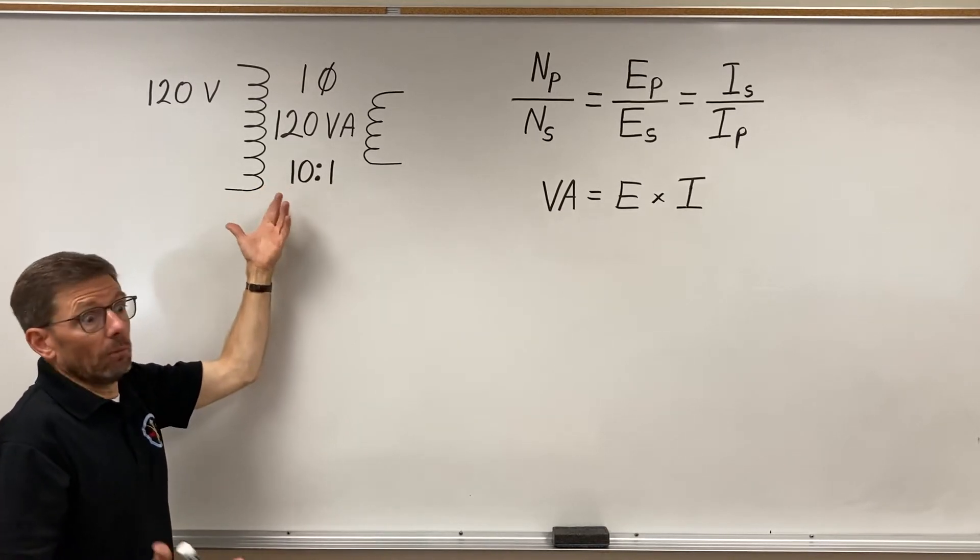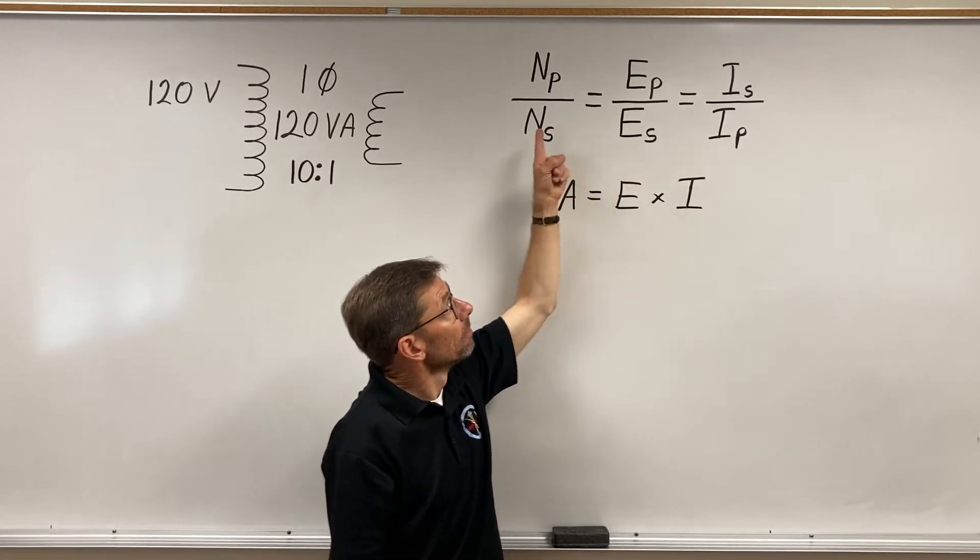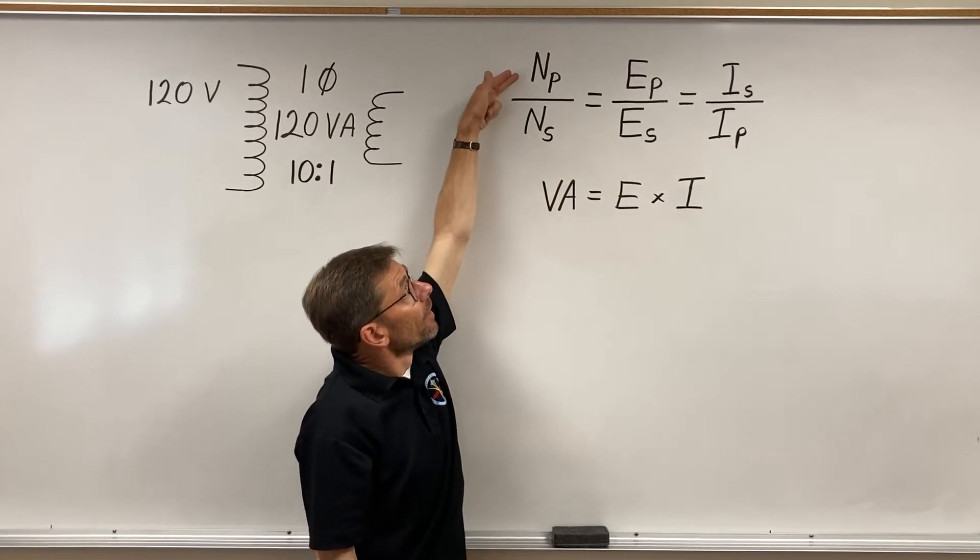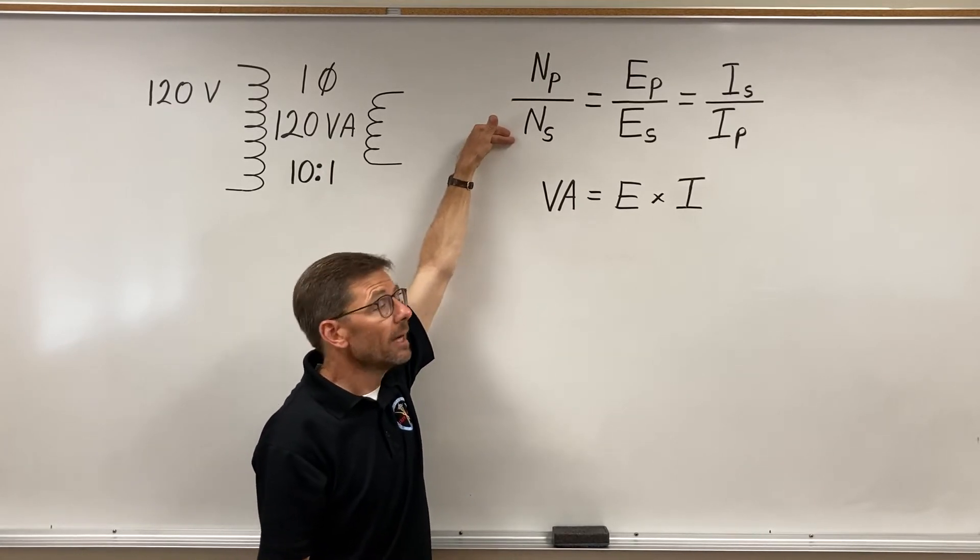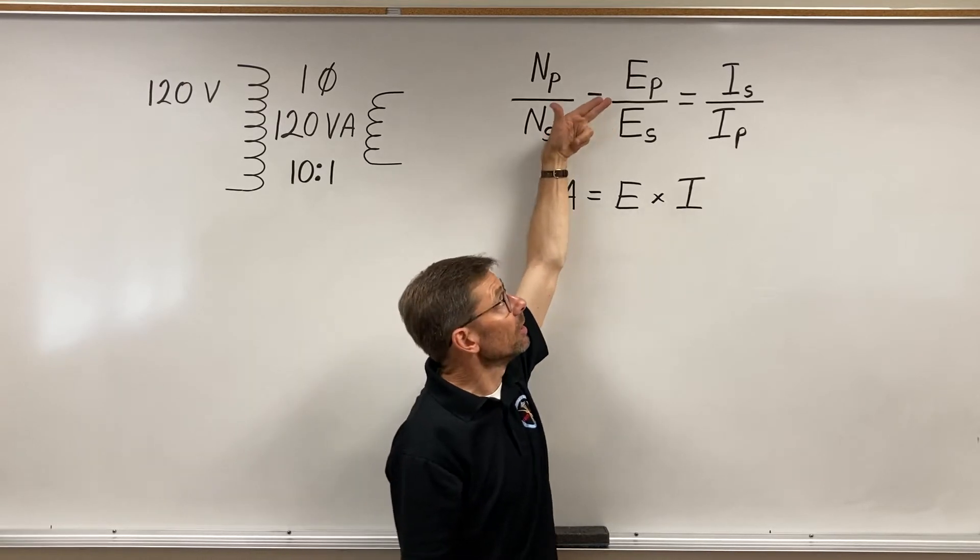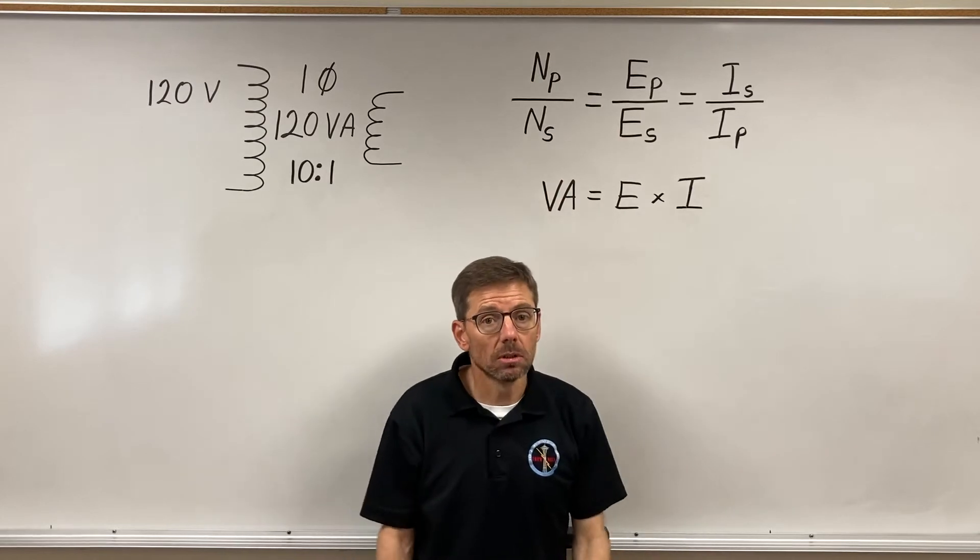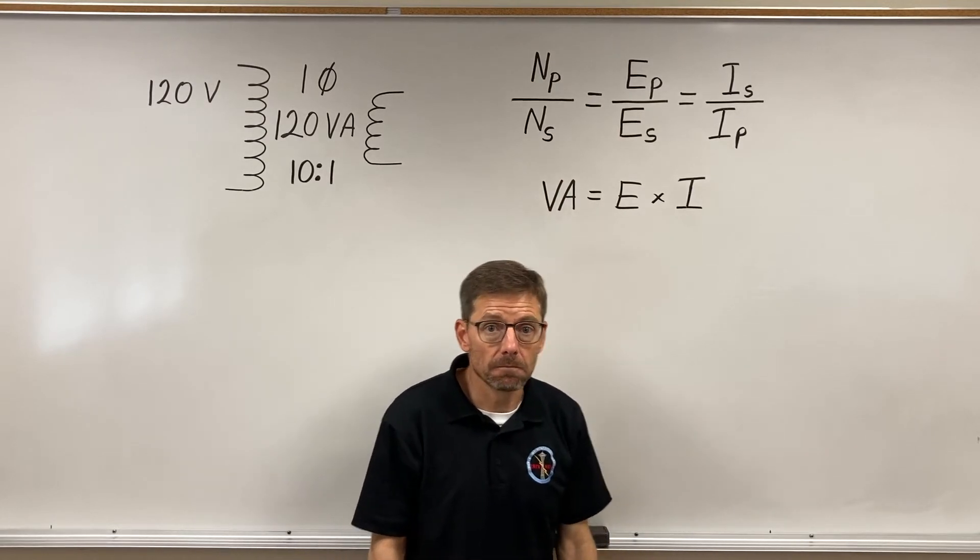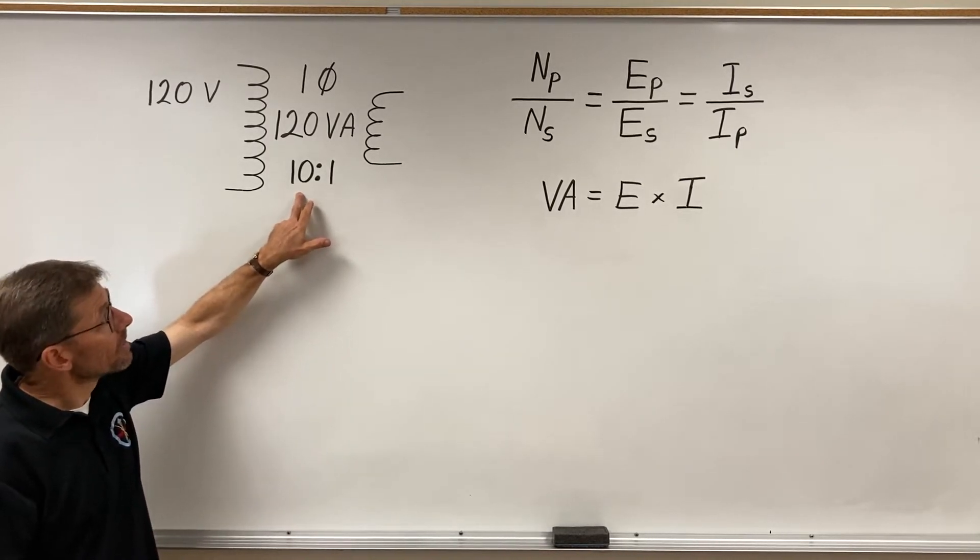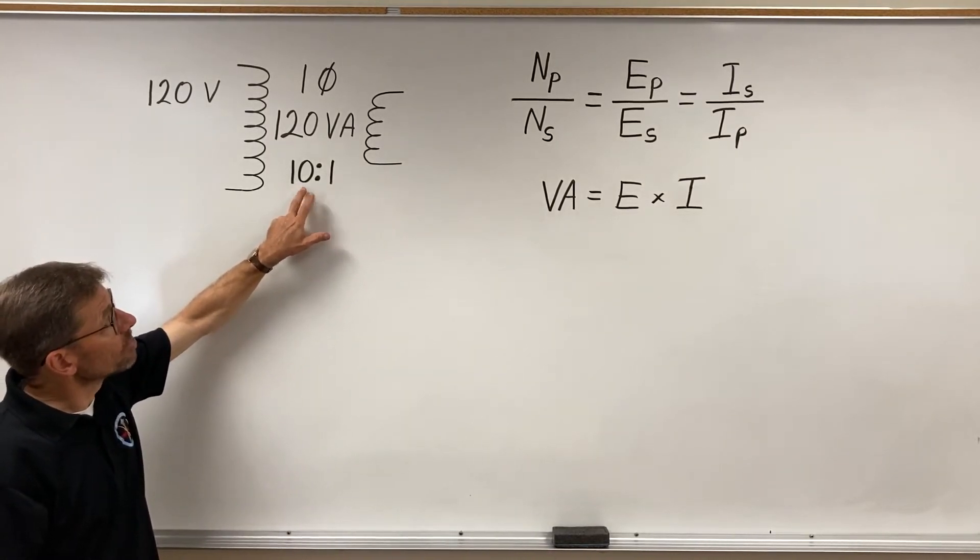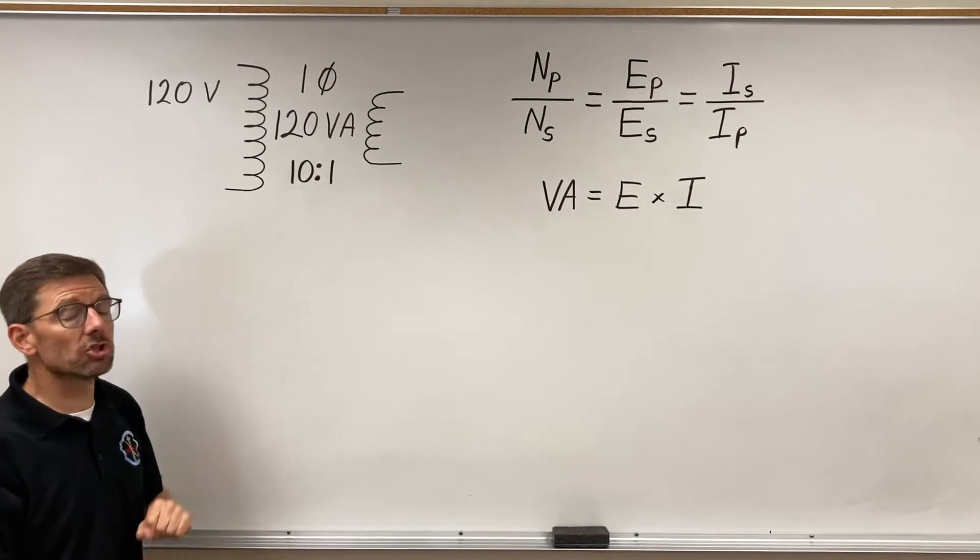What use is that to me? My ratios. The number of turns on the primary compared to the number of turns on the secondary is directly proportional to the voltage on the primary compared to the voltage on the secondary. So, what that means to me is that the voltage on the secondary has to be one-tenth of the voltage on the primary.